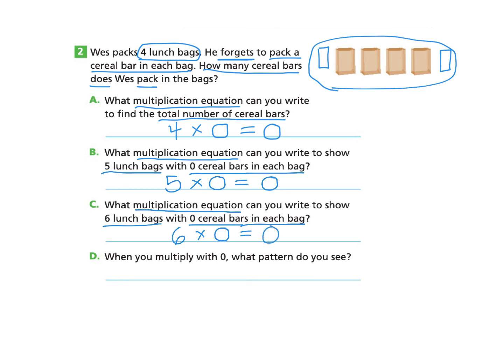Part D, when you multiply with 0, what pattern do you see? I'm guessing you're noticing that when we have a number multiplied by 0, we are going to get the answer 0. No matter what the factor is, 5 times 0 gave us 0. So whatever our factor is that multiplies with 0, we're always going to get the answer 0. So the explanation would be that when one of the factors is 0, the product is 0.